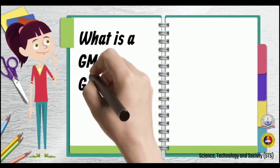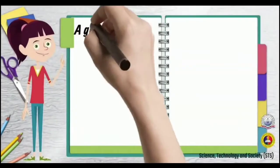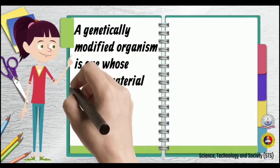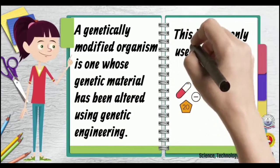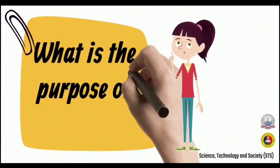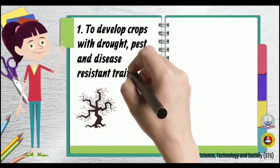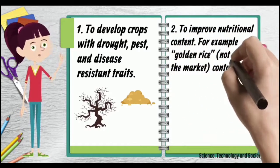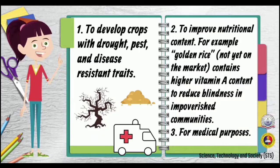So what is GMO or genetically modified organism? A genetically modified organism is one whose genetic material has been altered using genetic engineering. This is commonly used in food and medicine. The purpose of GMO includes developing crops with drought, pest, and disease-resistant traits, improving nutritional content — for example, golden rice contains higher vitamin A content to reduce blindness in impoverished communities — and for medical purposes.